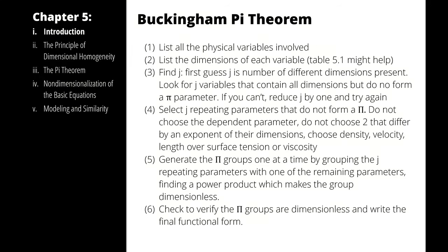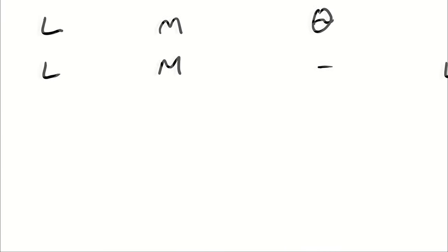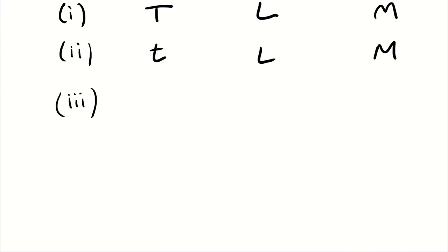Step three is to determine a J value — how many variables will repeat between the dimensionless parameters. A good rule of thumb is to set J equal to the number of dimensions that appear. Here we have time, length, and mass, so we start with J equal to three. With five total variables and three repeating, that means two will be non-repeating, giving us two pi groups.